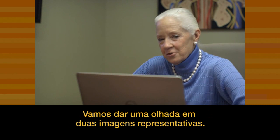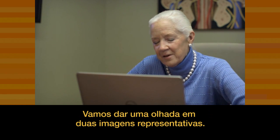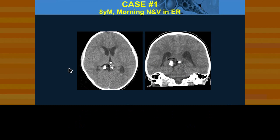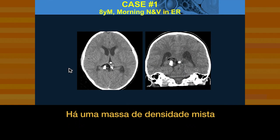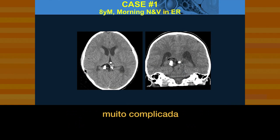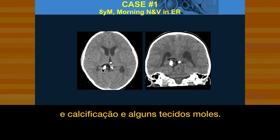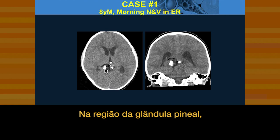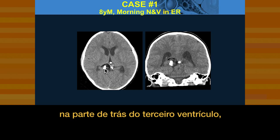Let's take a look at two representative images. There is a mixed density mass — a very complicated one — with imaging appearance suggesting fat and calcification and some soft tissue in the region of the pineal gland at the back of the third ventricle, and it's causing obstructive hydrocephalus.